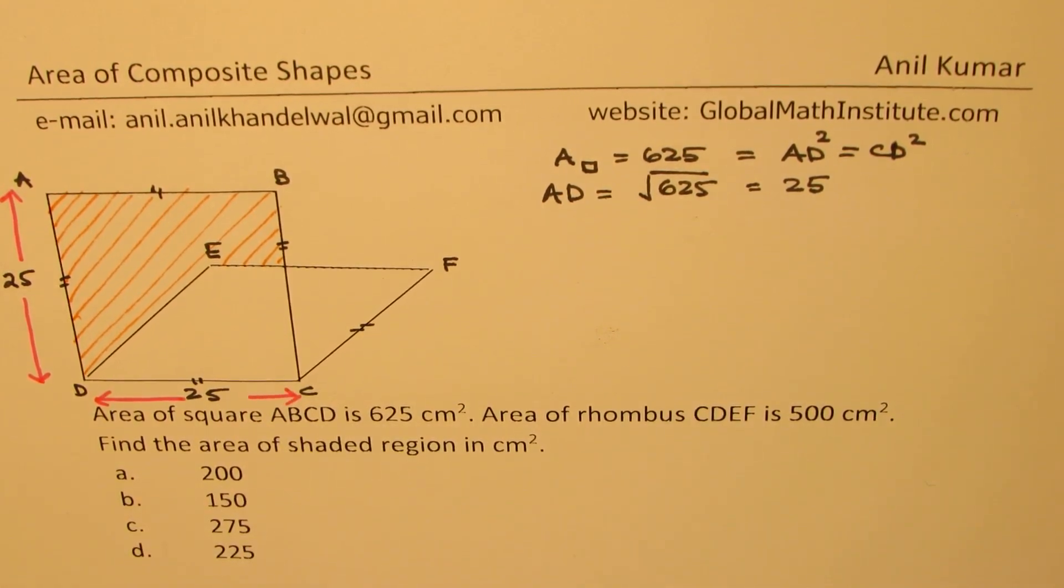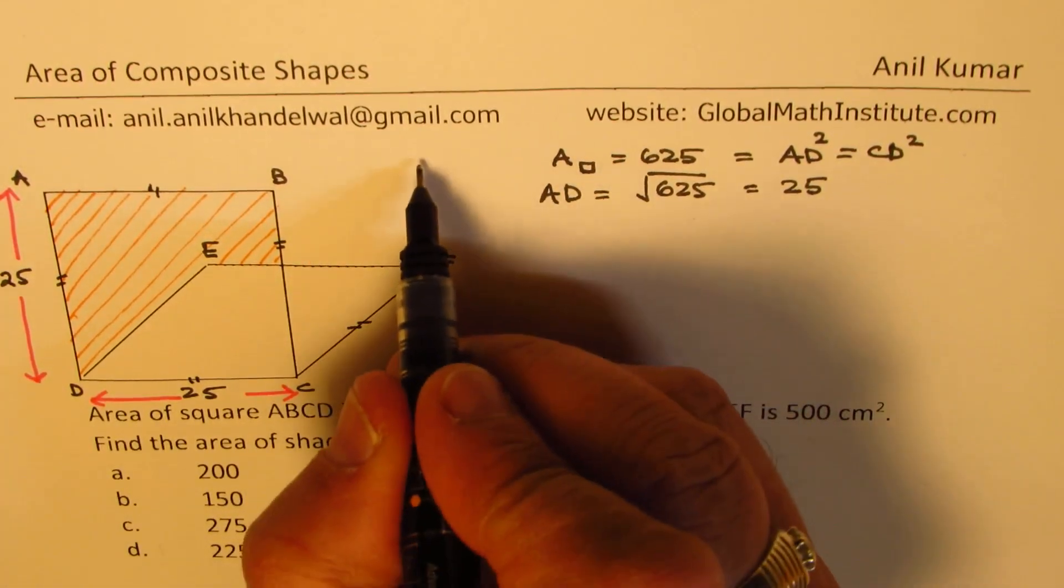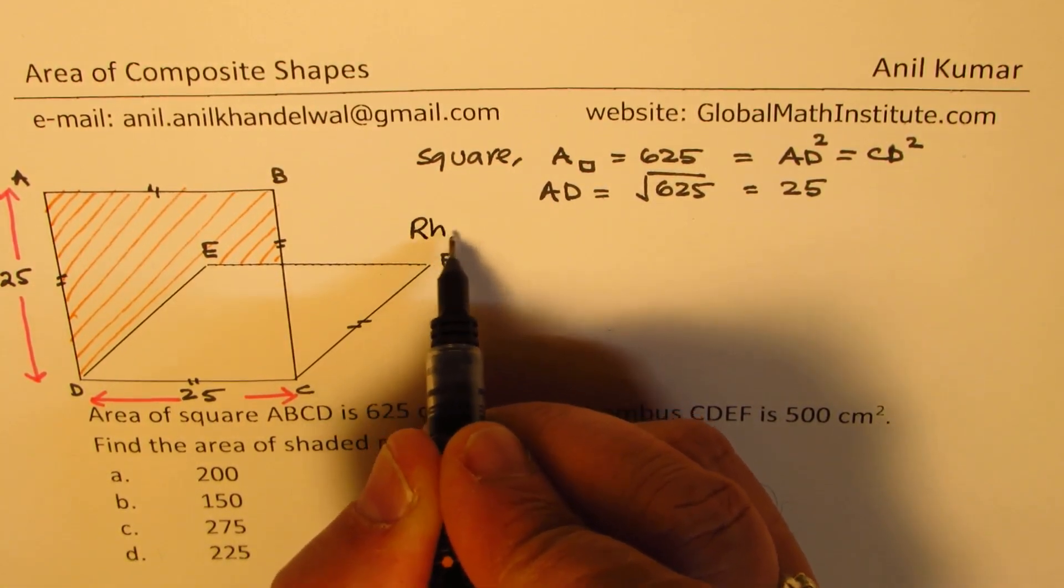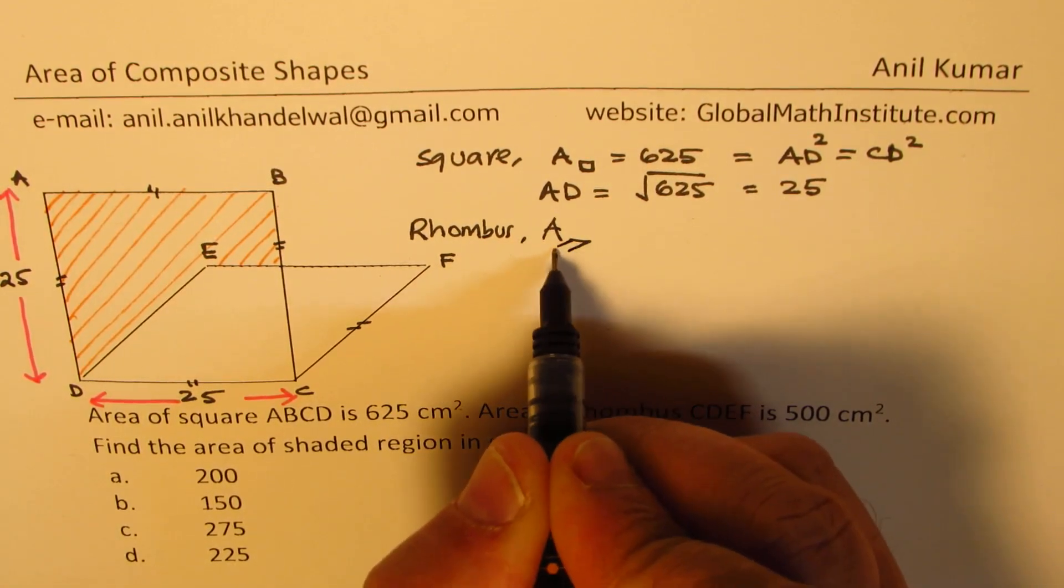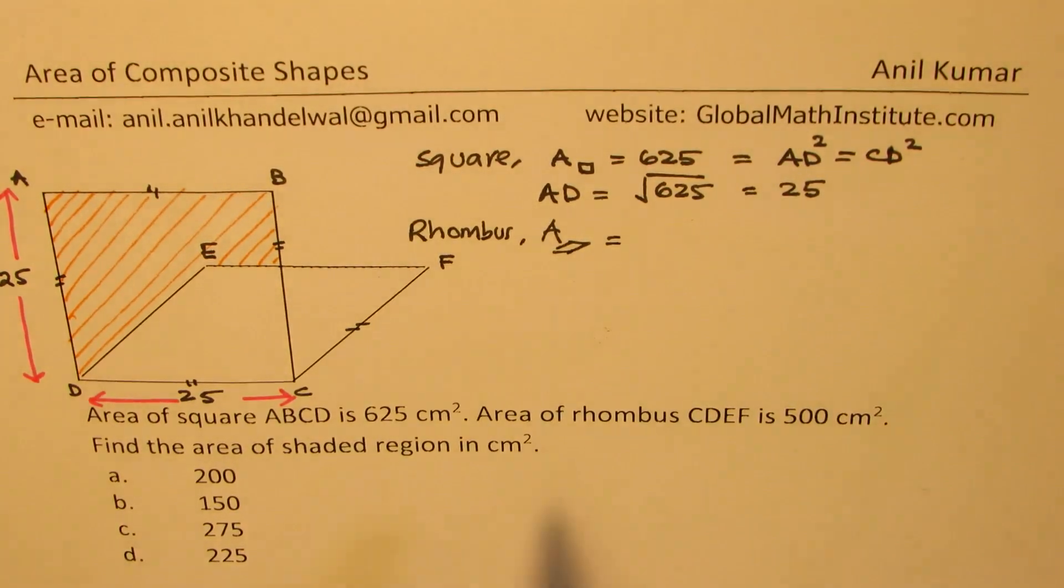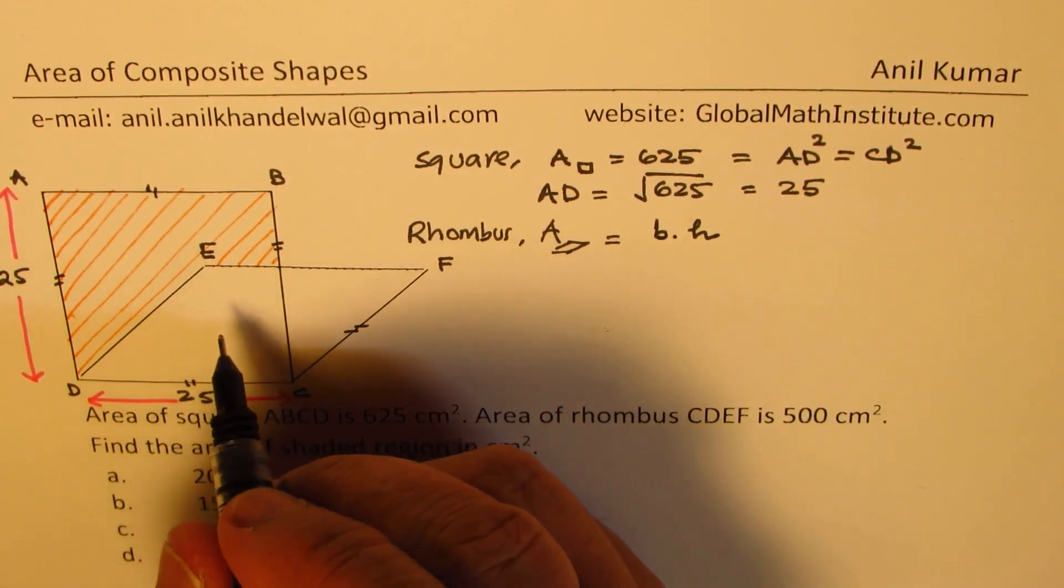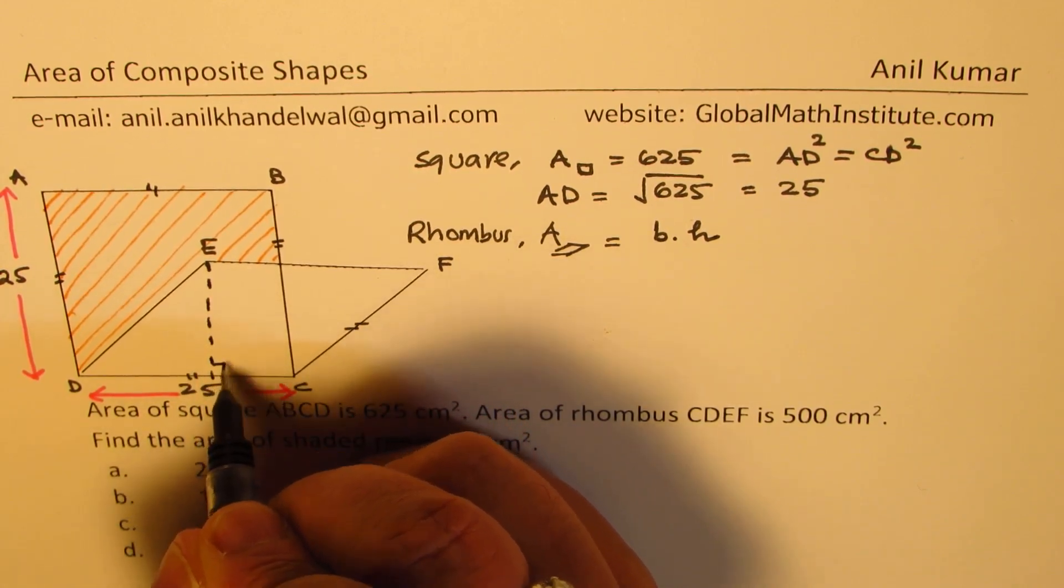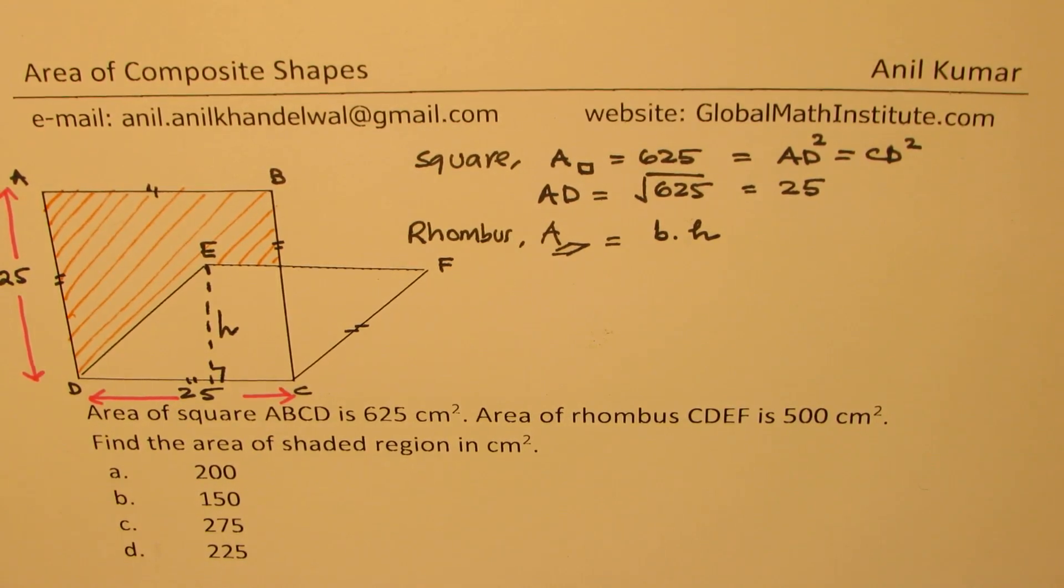Now let's work on the area of rhombus. Now area of rhombus is base times height. So let us say that the height for this is h. So let me just drop a perpendicular and we'll call this as the height. So base times height.